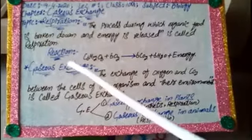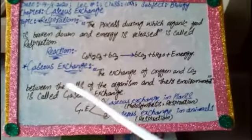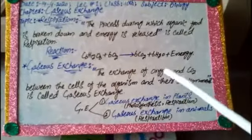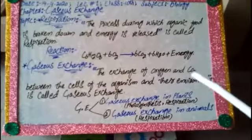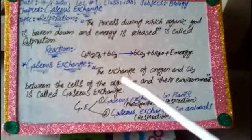Next is gaseous exchange. The exchange of oxygen and carbon dioxide between the cells of the organisms and their environment is called gaseous exchange.